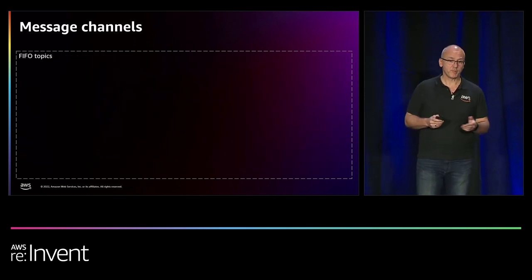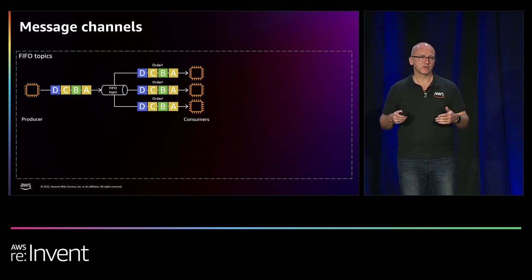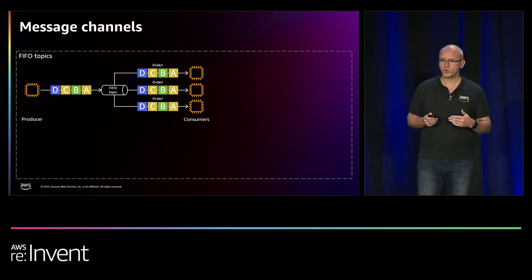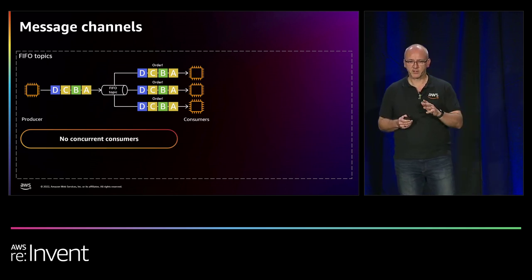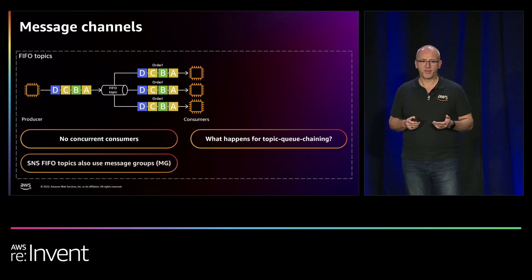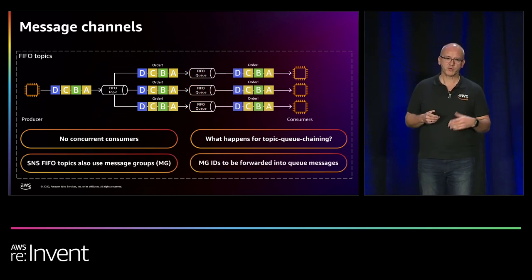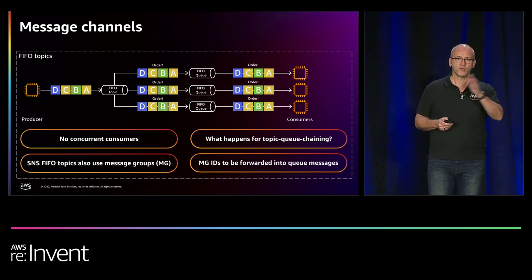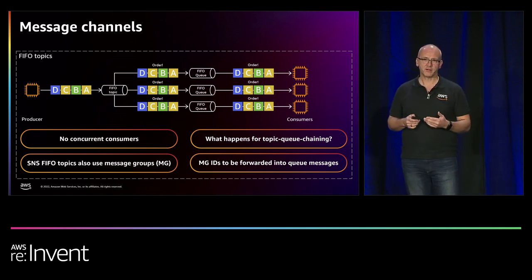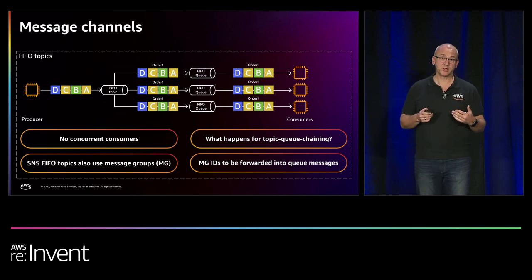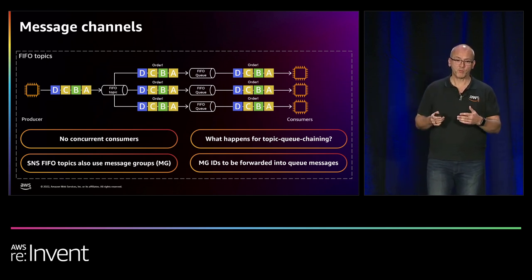There are also FIFO topics. With no concurrent consumers we don't need to worry as much. But when chaining a topic and a queue — at least with Amazon SNS and Amazon SQS — message group IDs are carried over, so you can retain message order on message group IDs for both topics and queues.